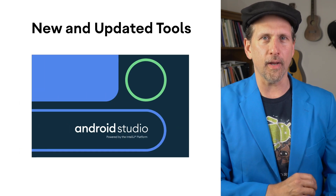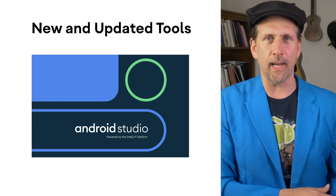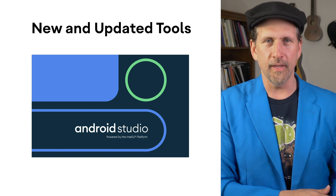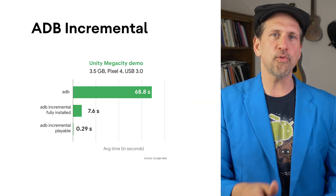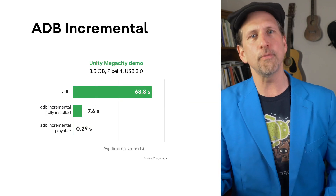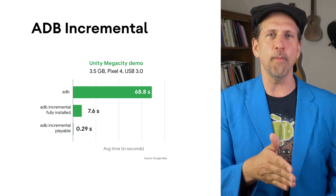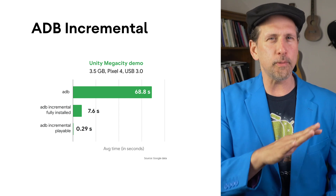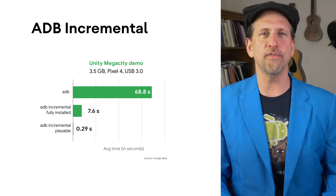To begin with, we've been investing in tools and products to make it easier to build and optimize games for Android. To help you iterate faster, Android 11, with supported devices, will have ADB incremental, helping you deploy changes orders of magnitude more efficiently.